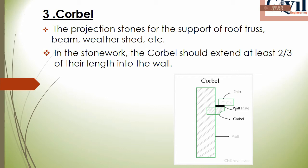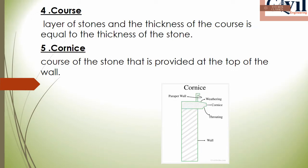The fourth technical term is course. The first layer of stone masonry is called a course. The thickness of the course is equal to the thickness of the stone used.